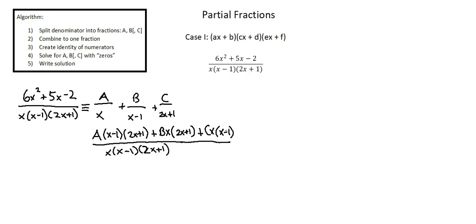Step three create identity of numerators. Again the identity is the idea that the relationship works for all x values so our identity of numerators is, and let me go up and label each of these steps as well. Step one, step two, now on step three.